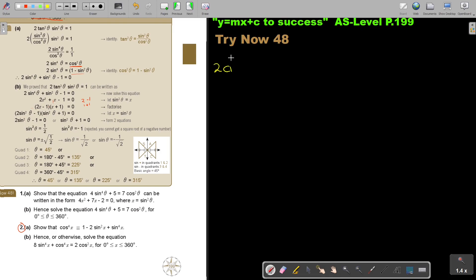Number two, A. So this is going to be cos to the power 4x minus 2 sin squared x plus sin to the power 4x. So first, I just said show, show, so it's the identity. It's proof that the left-hand side is equal to the right-hand side.